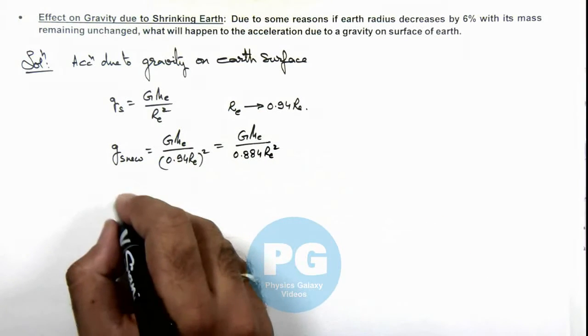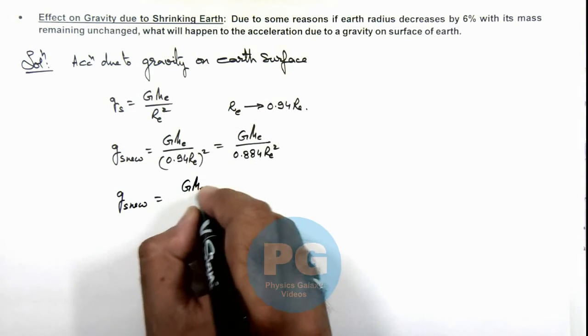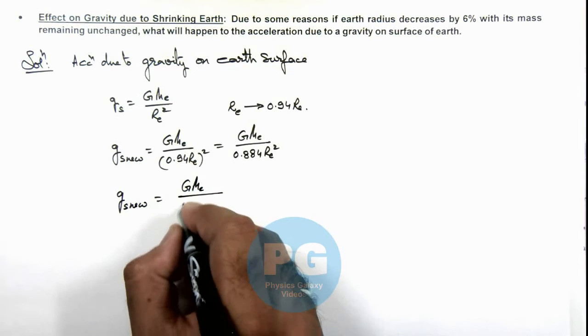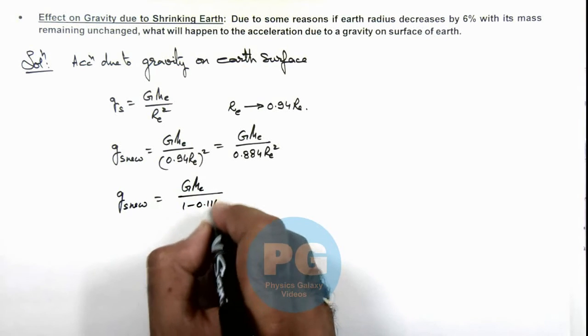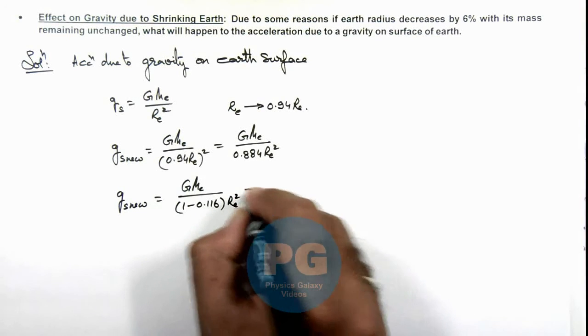For simplification, we can write 0.884 as 1 minus 0.116 times r_e.